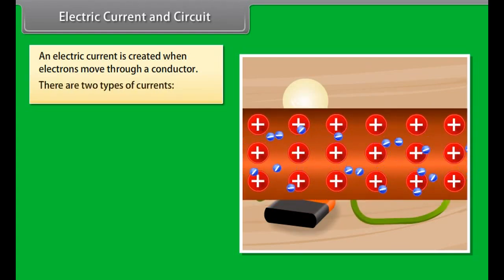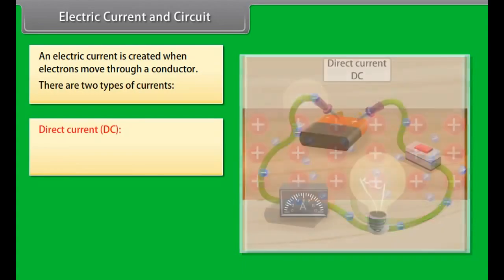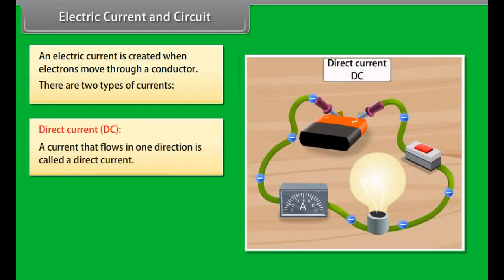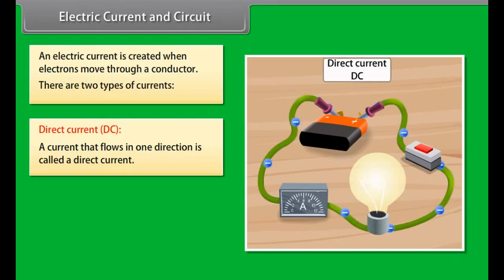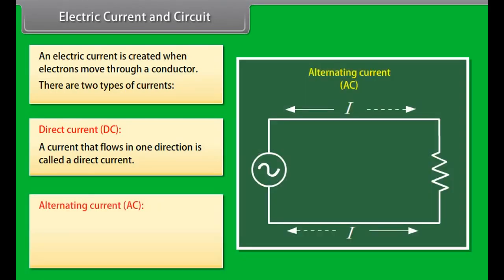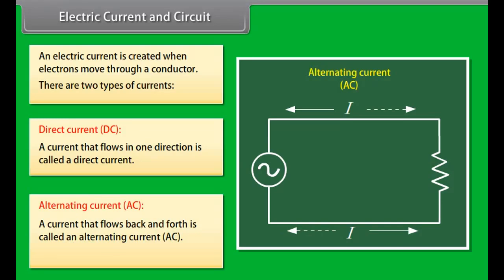There are two types of currents. Direct current (DC): a current that flows in one direction is called a direct current or DC. For example, a battery produces a direct current. Alternating current (AC): a current that flows back and forth is called an alternating current or AC. The symbol of electric current is I.